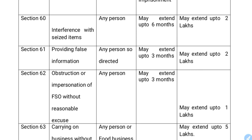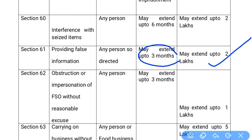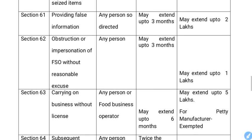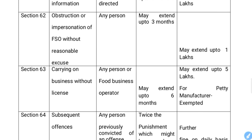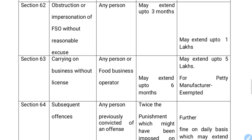If someone provides false information, the fine may extend up to ₹2 lakhs or jail. Section 62 covers obstruction or impersonation of a Food Safety Officer (FSO) without reasonable excuse. If a food safety officer is impersonated, the punishment is up to 3 years in jail or a fine of ₹8 lakhs.